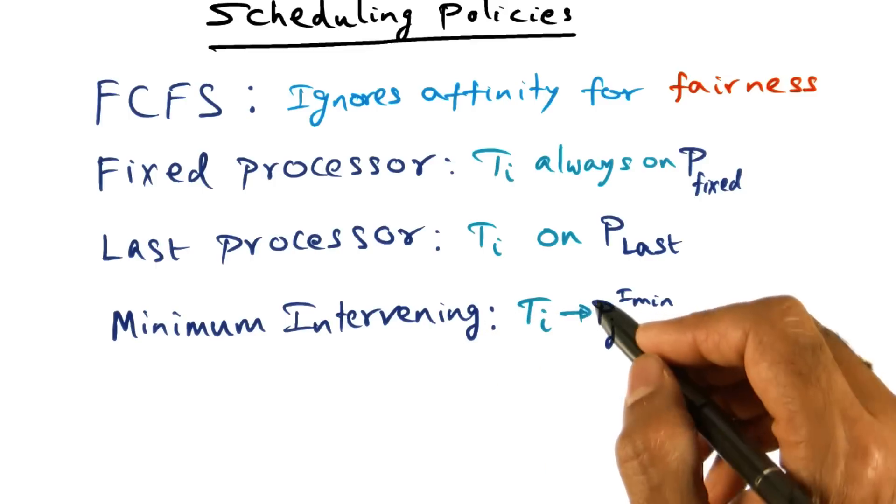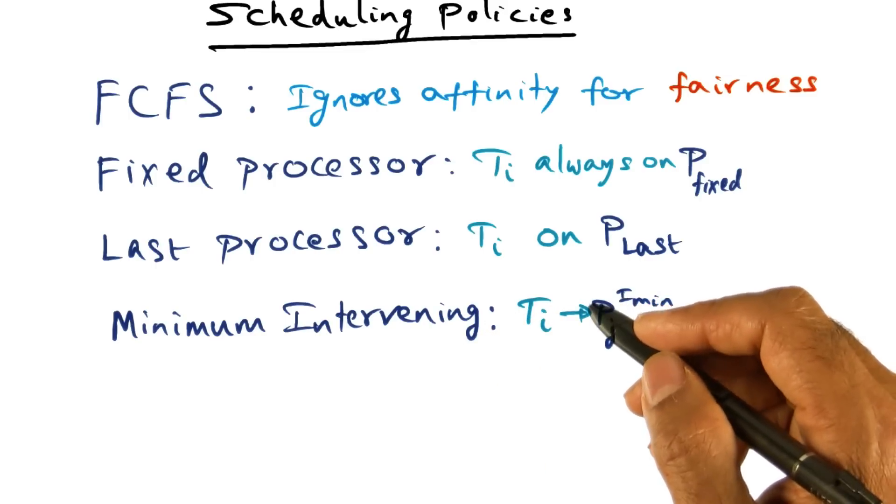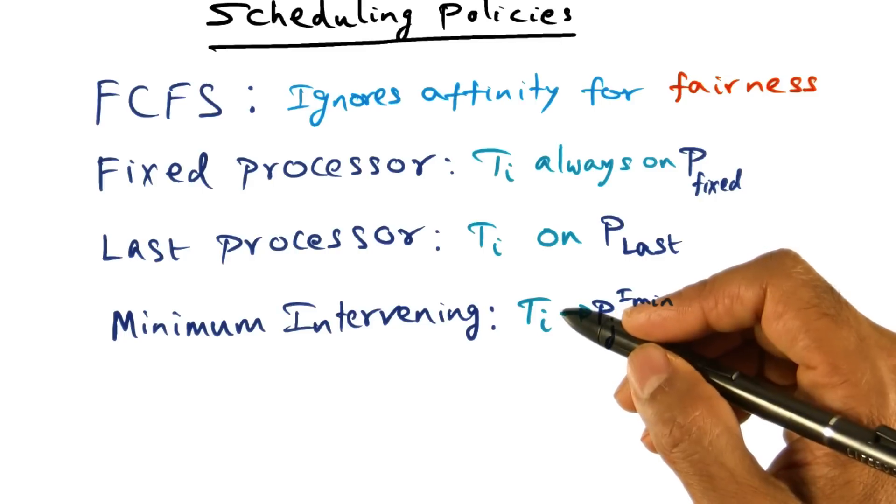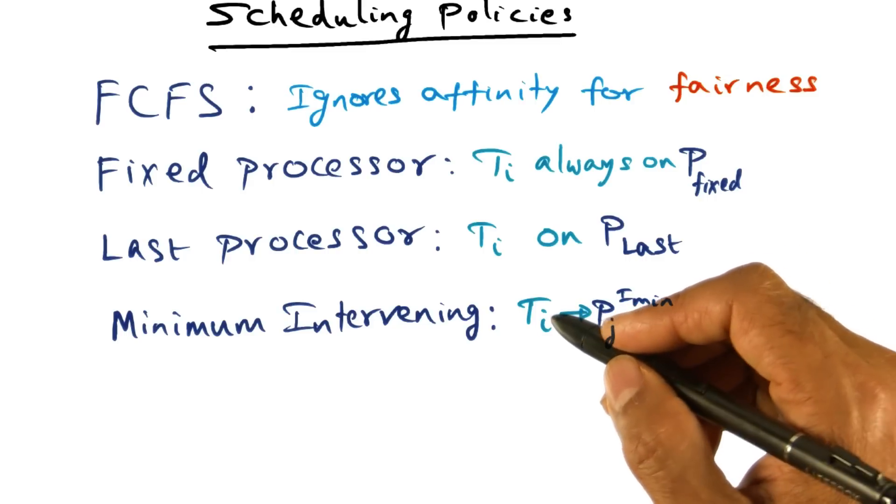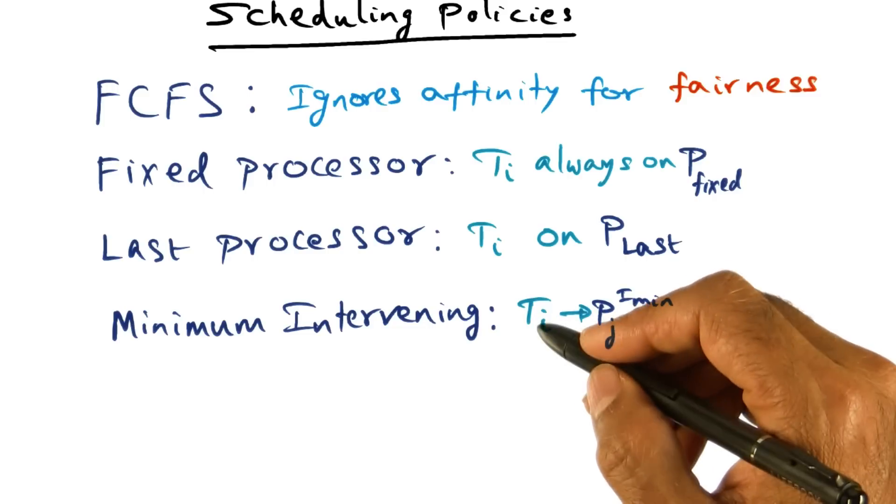And there's a variant of minimum intervening, which is called limited minimum intervening, which is essentially saying that if I have, let's say, a thousand processors in the multiprocessor, then the amount of information that I want to keep for every one of these threads is huge.